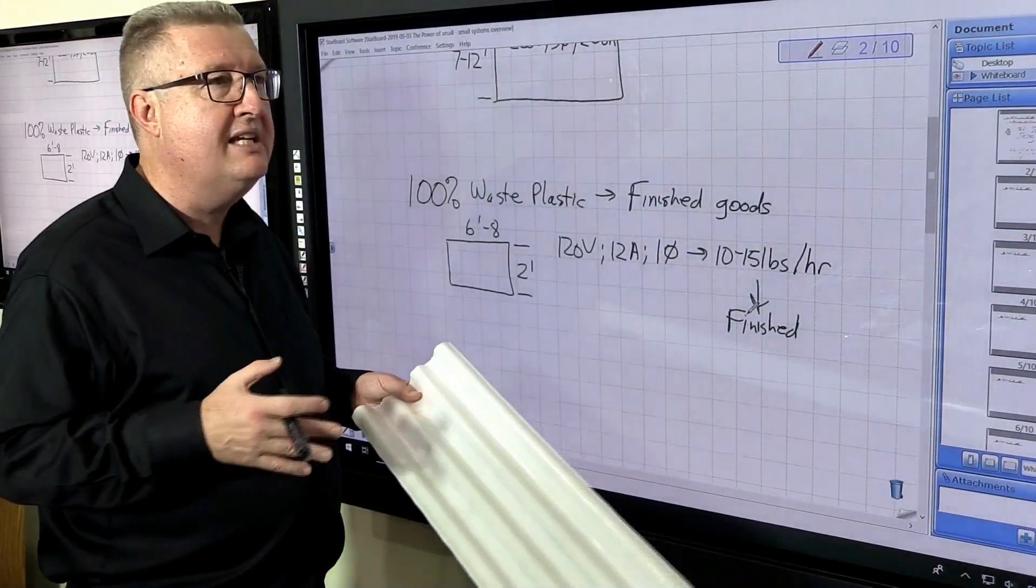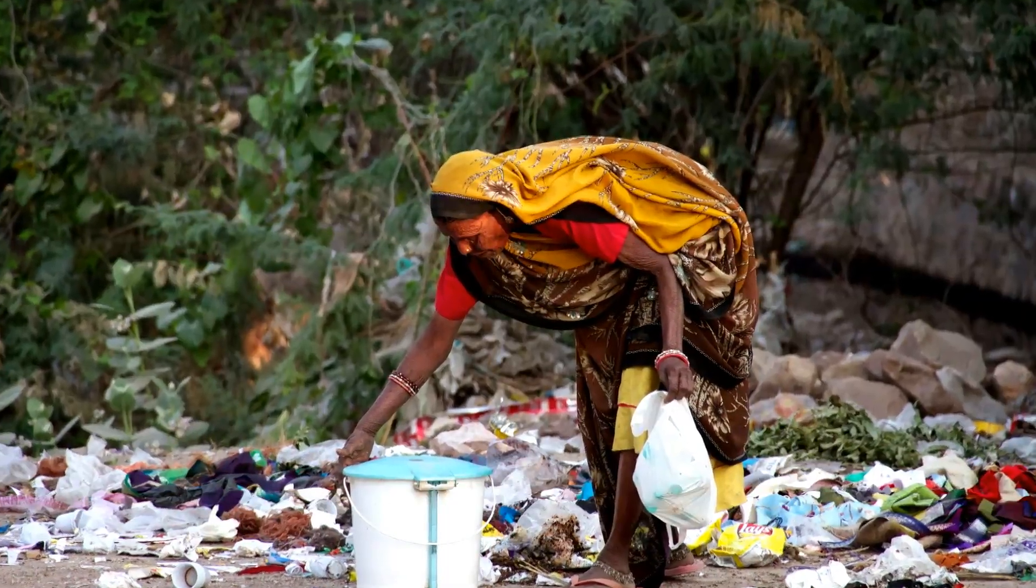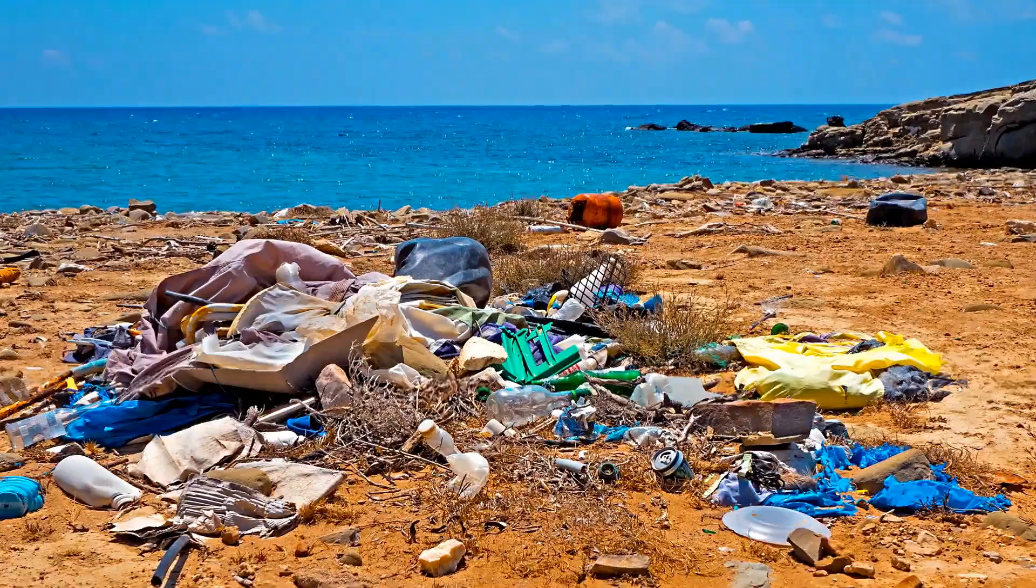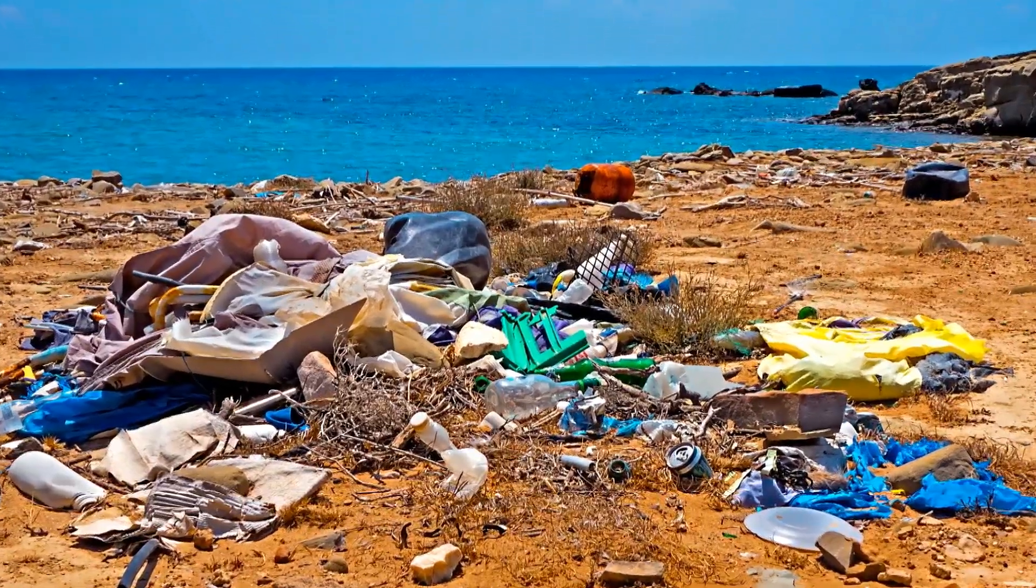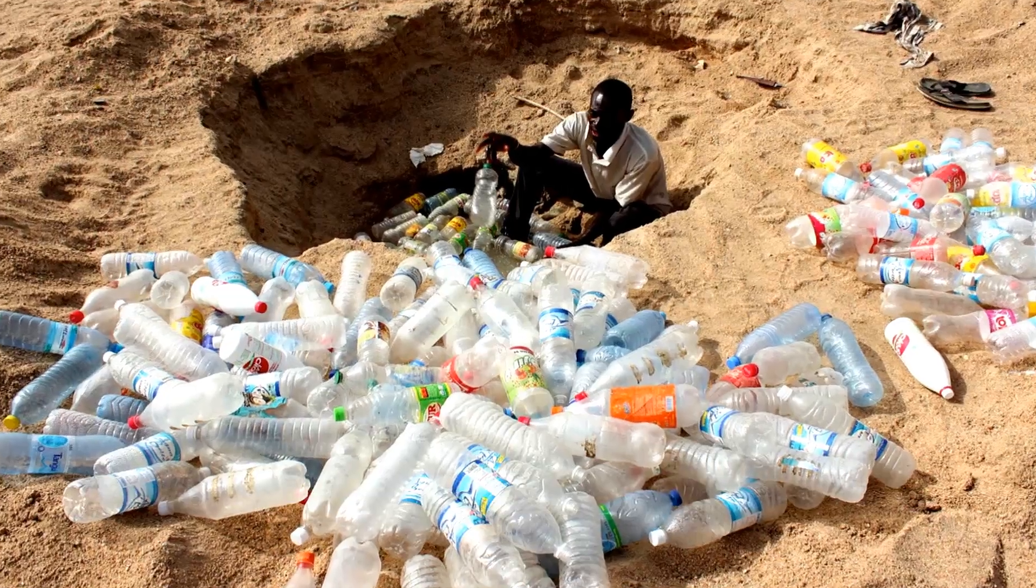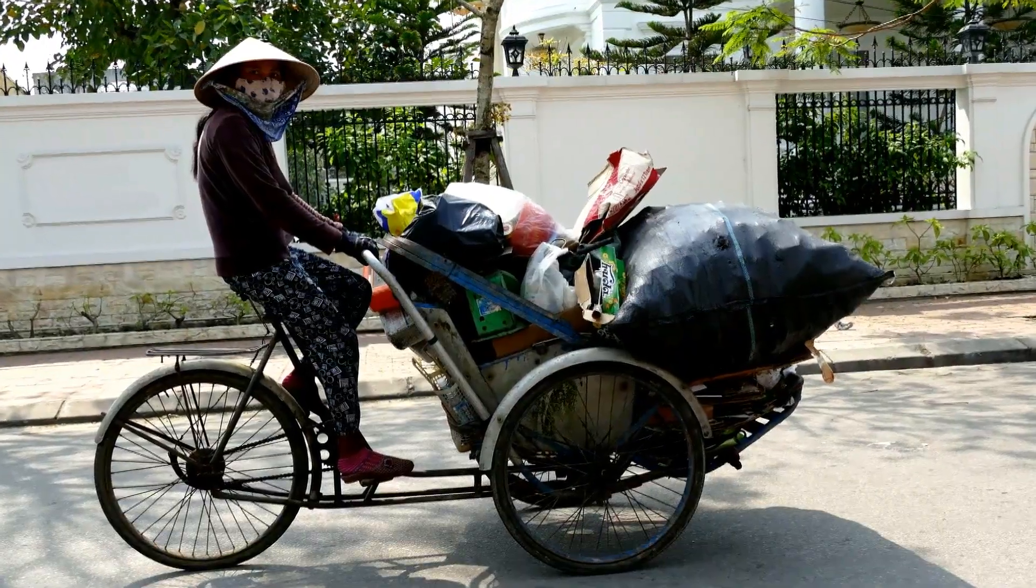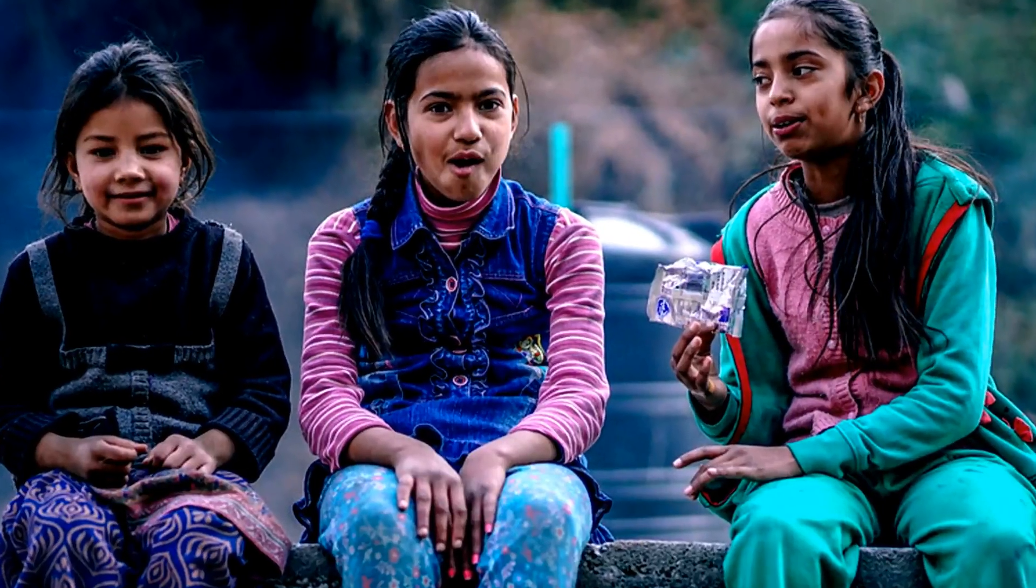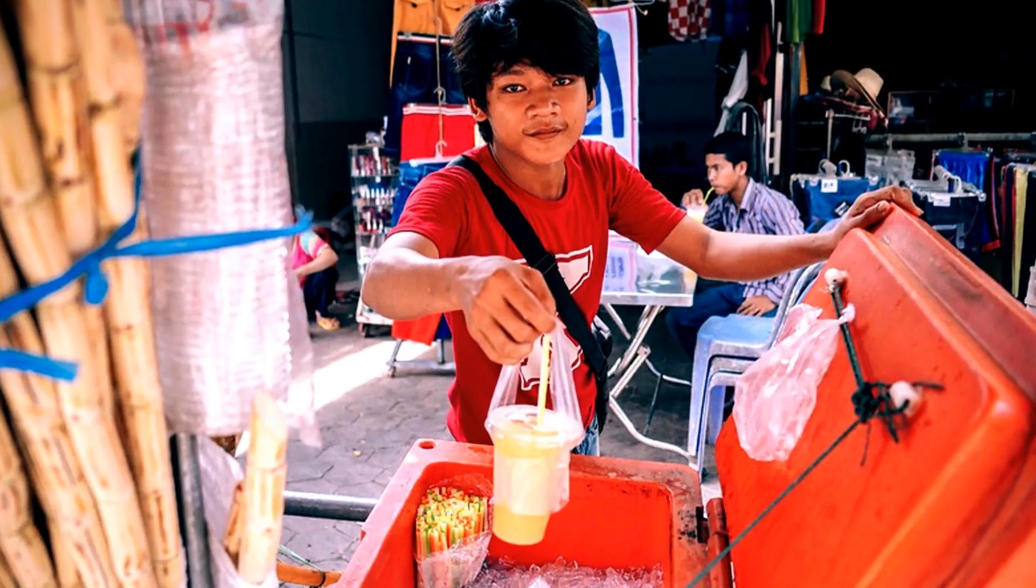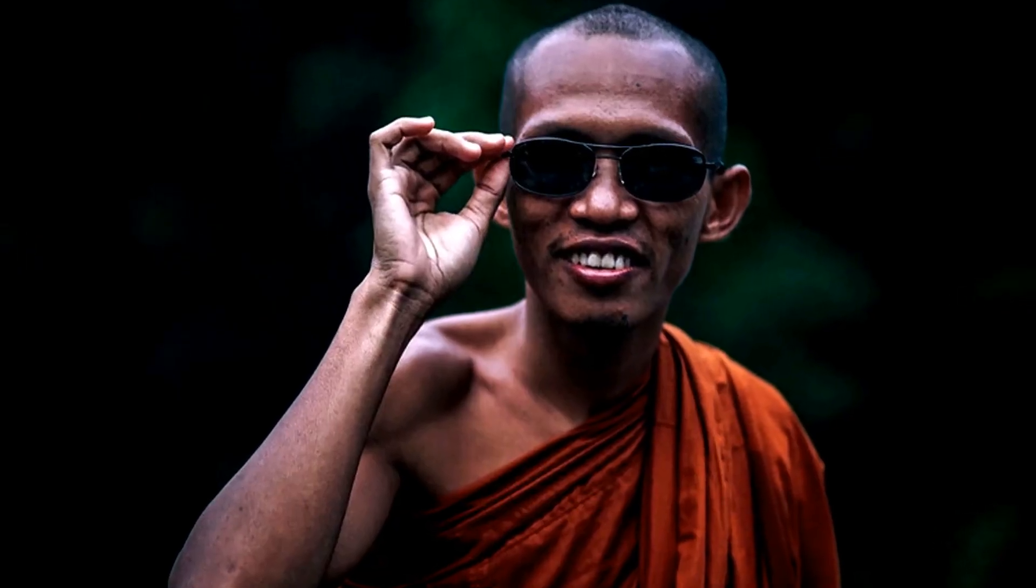So now what we can do is in a place that's basically polluted by plastic, we can encourage people to bring that plastic waste in and literally for about half a gallon of fuel per hour, we can make 10 to 15 pounds of finished plastic goods and give them to those people. So now what we're able to do is give people a hand, a way of cleaning up their environment and creating goods they need.